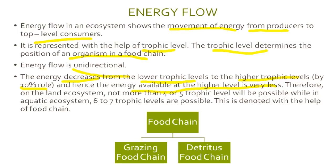At the lowest trophic level of plants or autotrophs, energy is 100%. As we move up to primary consumers, only 10% remains. Above that, secondary consumers have just 1%, and tertiary consumers have only 0.1%. Therefore, on land ecosystems, not more than 4 or 5 trophic levels are possible, while in aquatic ecosystems, 6 to 7 trophic levels are possible.